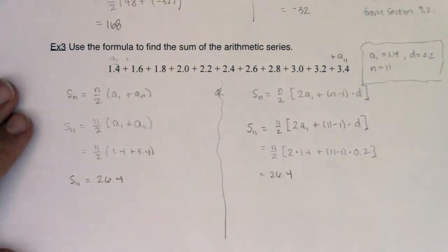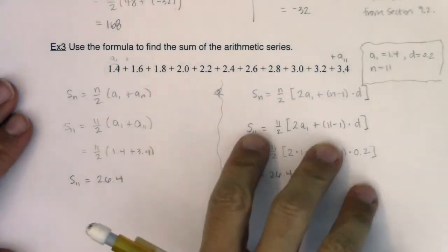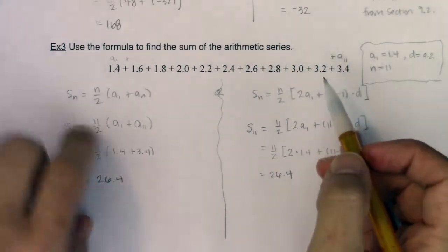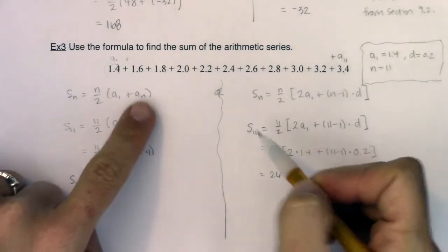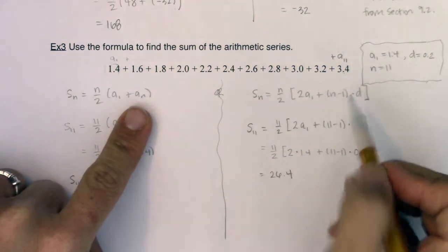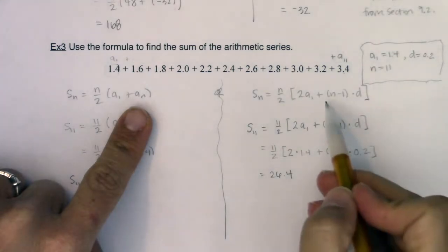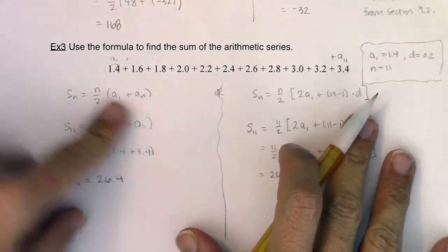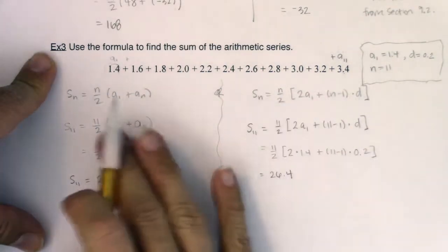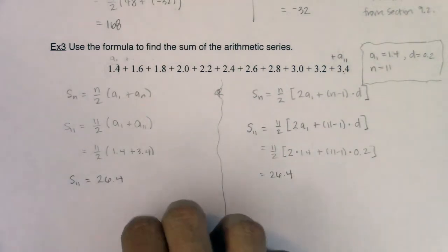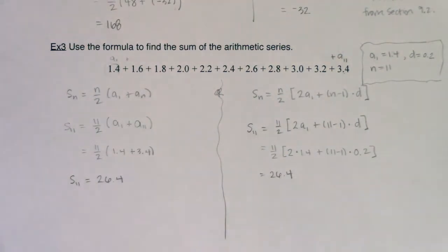So there we are using either formula. It doesn't really matter which one in this case, but we do use different pieces of information. They both use a_sub_1 and n. The first uses the nth term; the second uses that a_sub_n formula from section 9.2 — so it uses d. Depending on what you know, that can help you choose the more efficient formula, but either formula will work. With that, we're going to flip the page.